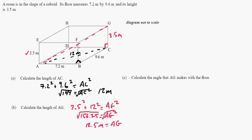So just two examples here where we have to use Pythagoras. Now, the only kind of tricky part is just seeing what side they're asking for. So now they say calculate the angle that AG makes with the floor. So AG, and here's the floor. So they're talking about this angle right here.